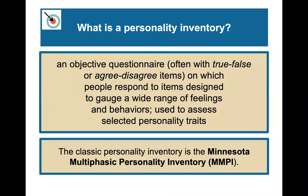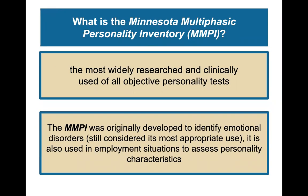What is a personality inventory? It's an objective questionnaire — often true/false or agree/disagree items — on which people respond to items designed to gauge a wide range of feelings and behaviors, used to assess selected personality traits. One of the most famous is the MMPI, the Minnesota Multiphasic Personality Inventory, which is probably the most widely researched and clinically used of all objective personality tests.